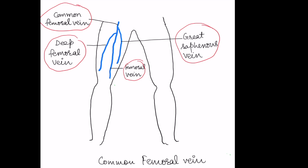For DVT assessment, we perform ultrasound scanning at three levels: first at the level of the inguinal crease, second at the medial aspect of the mid-thigh, and third at the level of the popliteal fossa.